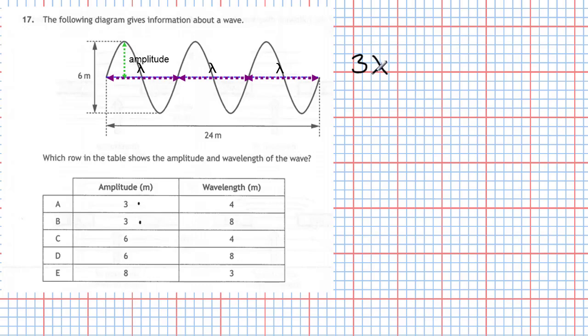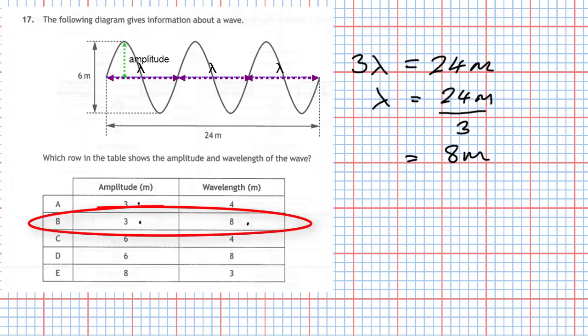I'm going to write it like this: three wavelengths is going to equal 24 meters. So one wavelength is going to be 24 meters divided by three and that's going to give us a value of a wavelength of eight meters. So it looks like B will be the correct answer. Amplitude 3 meters and wavelength 8 meters. Answer B.